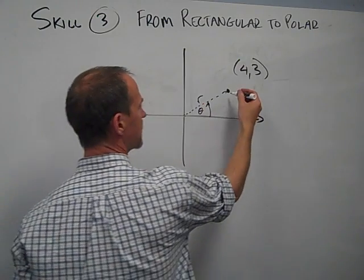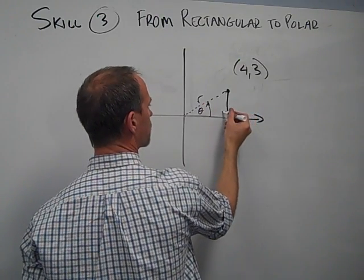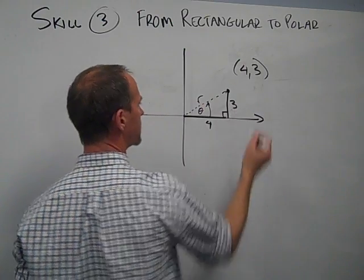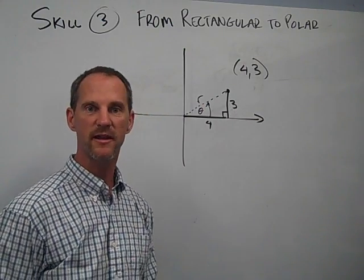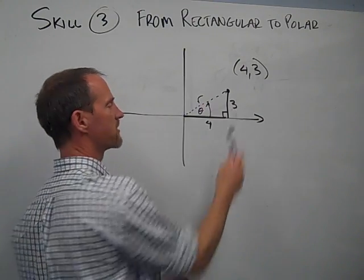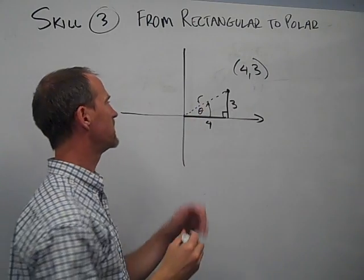So again, if we just think about it in terms of rectangular coordinates being over some x amount, that's 4, and then up some y amount, that's 3, we can see pretty quickly that using the Pythagorean theorem, squaring 4, squaring 3, adding them up, and then square rooting them will get us that radius.